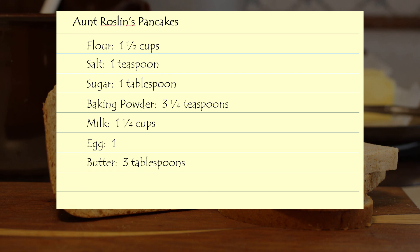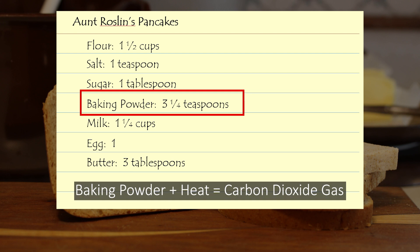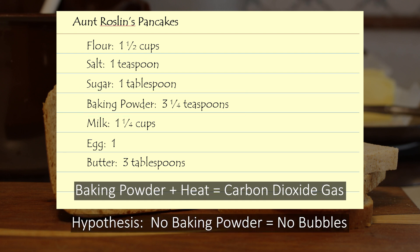In our example, if you did some research on the pancakes' ingredients, you might find that one of them, baking powder, gives off carbon dioxide when it's heated. Therefore, we could hypothesize that pancakes made without baking powder will not form bubbles.